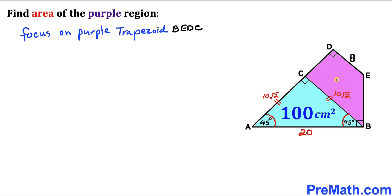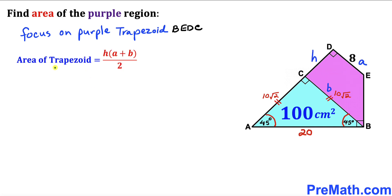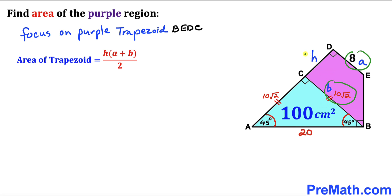Now let's focus on the purple trapezoid BEDC and calculate its area. Recalling the trapezoid area formula: area equals height H times (A plus B) divided by 2. In our case the two parallel bases are A equals 8 and B equals 10√2, and we need to find the height H.